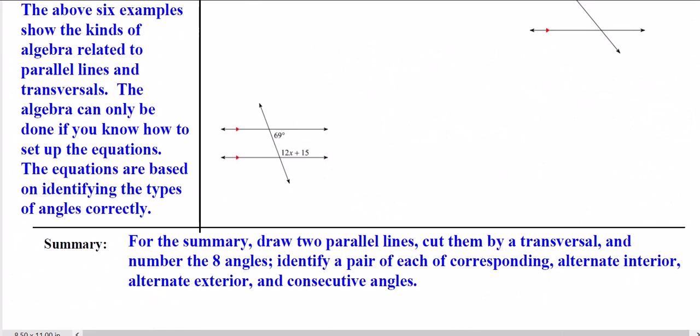For your summary, I want you to get really good at identifying these angle pair relationships. So, draw two parallel lines, cut them with the transversal, number the eight angles, one through eight, identify at least one pair of each of the following. So, identify a pair of corresponding angles. Identify means just tell me like angle one is angle whatever. Don't have to find me any math or algebra. Just identify a pair. Alternate interior angles, alternate exterior angles, and consecutive interior angles.